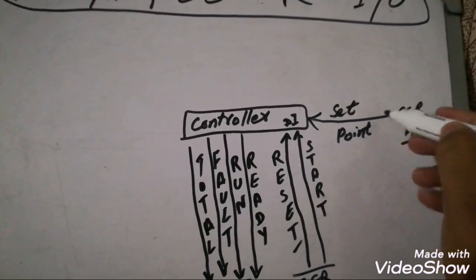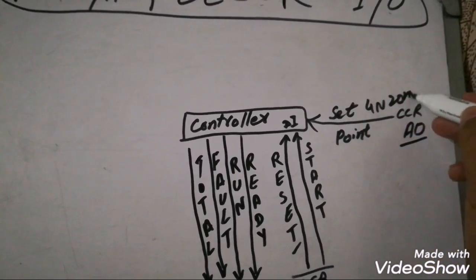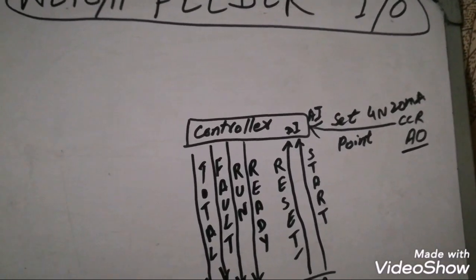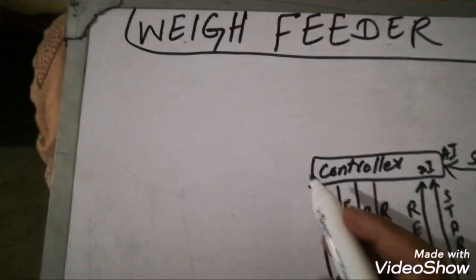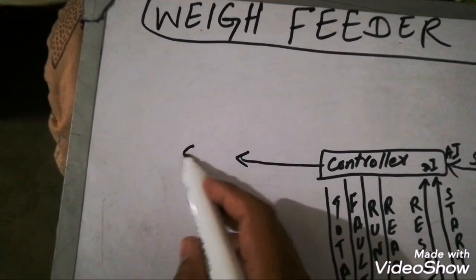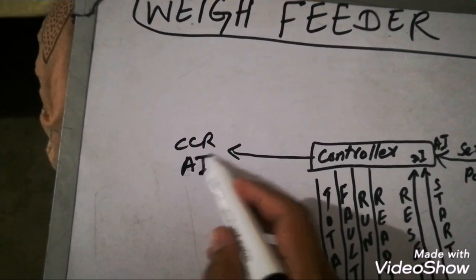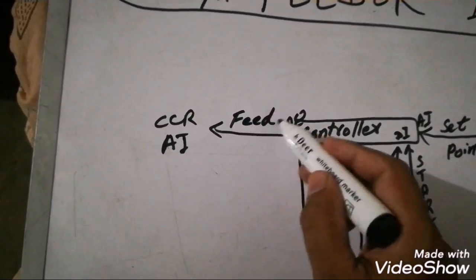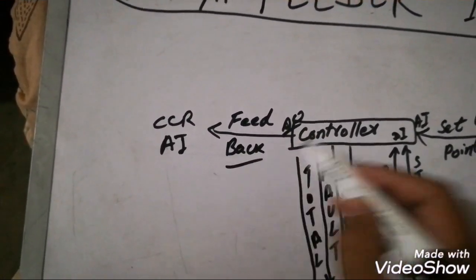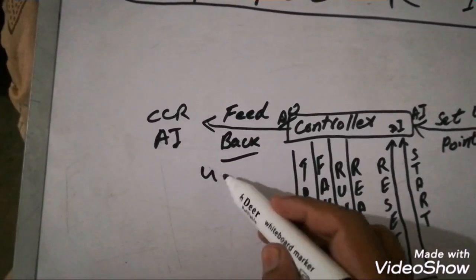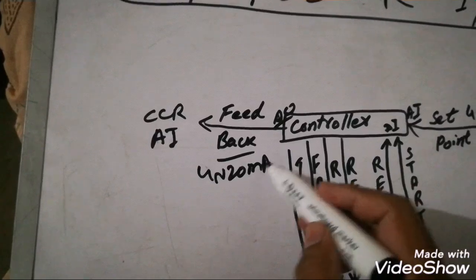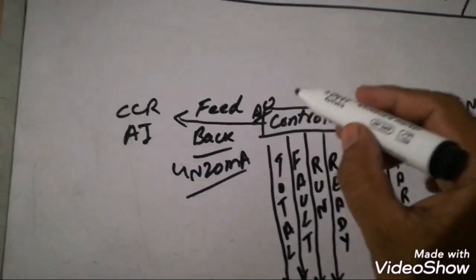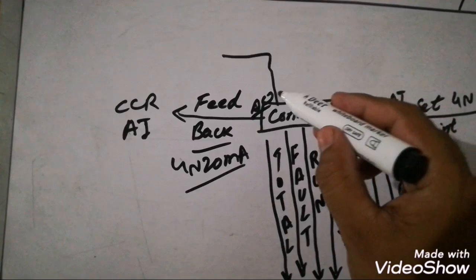There is a CCR analog output which is the set point of the controller — how much material we need from the wave feeder. This set point is 4 to 20 mA. The analog output of the controller, which is the CCR analog input, is the feedback of the wave feeder showing how many tons or kg are passing per hour. This is also 4 to 20 mA and represents feedback to the operator in ton per hour.